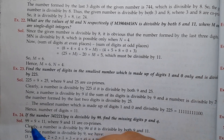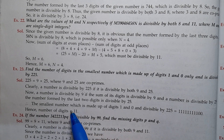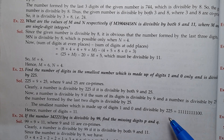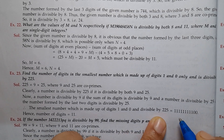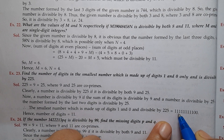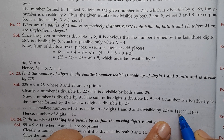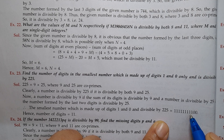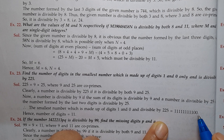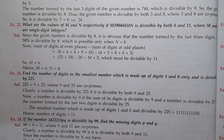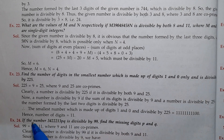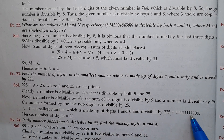So we have 1 appearing 9 times and 0 appearing 2 times. Therefore, the smallest number made up of digits 1 and 0, divisible by 225, has 9 + 2 = 11 digits. Hence, the number of digits is 11.